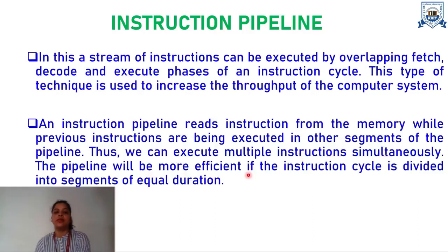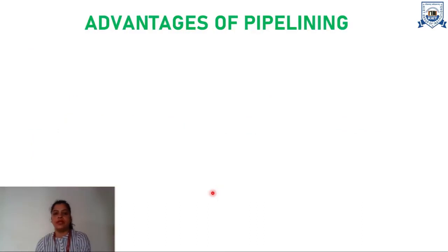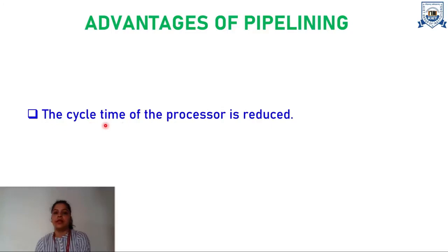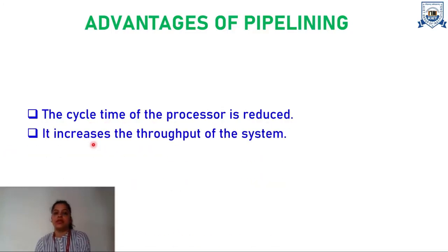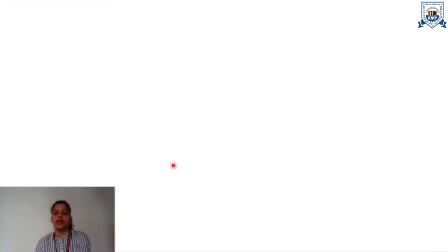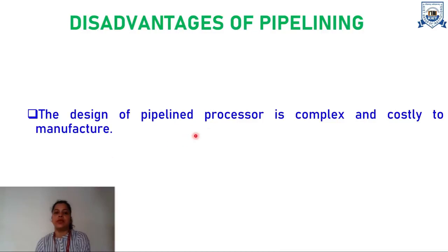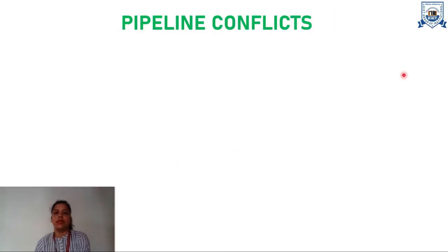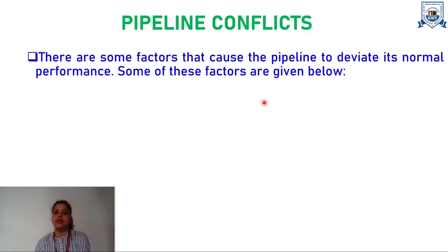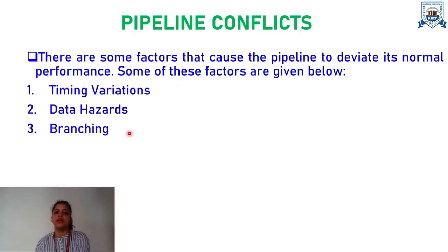Pipelining will be more efficient if the instruction cycle is divided into segments of equal duration. Advantages of pipelining include: the cycle time of the processor is reduced, it results in an increase in the throughput of the system, and it makes the system more reliable. However, it also has some disadvantages: the design of the pipeline processor is complex and costly to manufacture, and instruction latency is also more. Pipeline conflicts are factors that cause the pipeline to deviate from its normal performance, including: timing variation, data hazard, branching, interrupt, and data dependency.